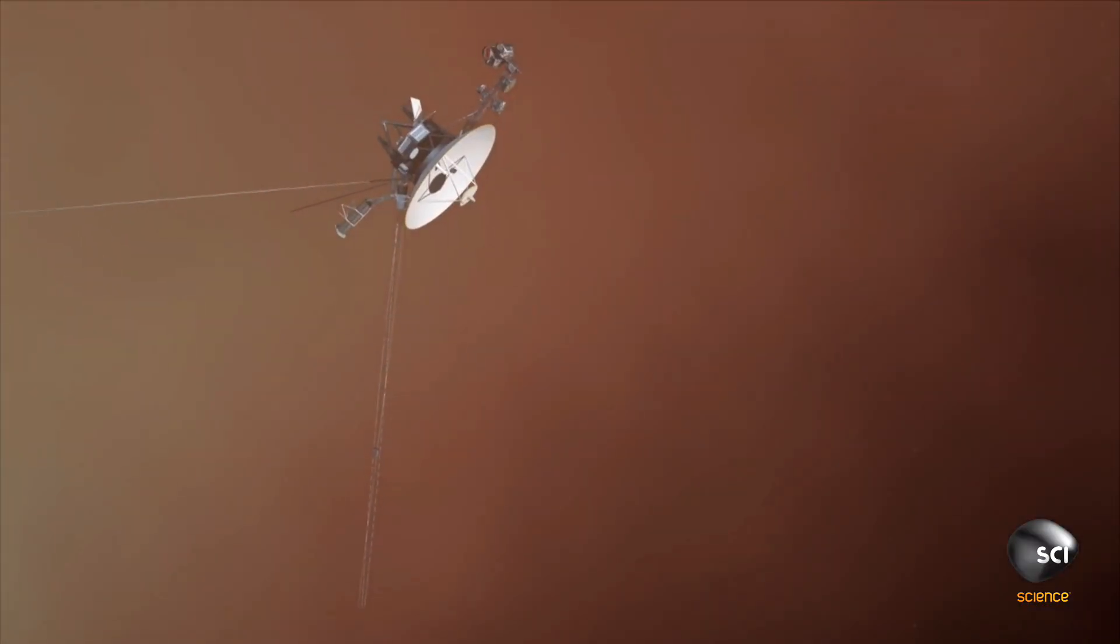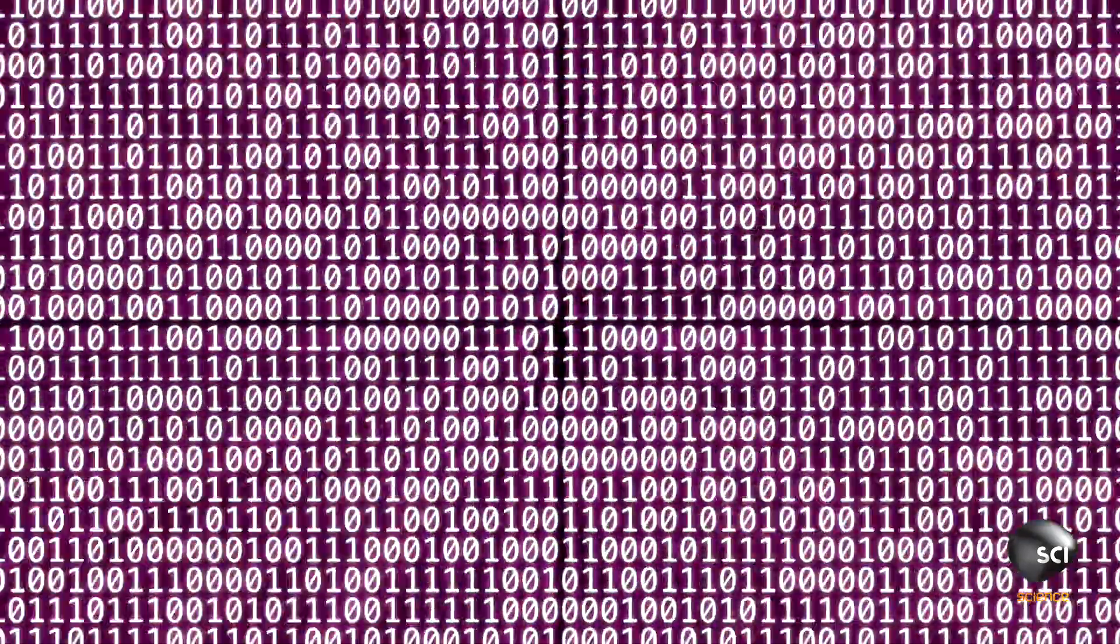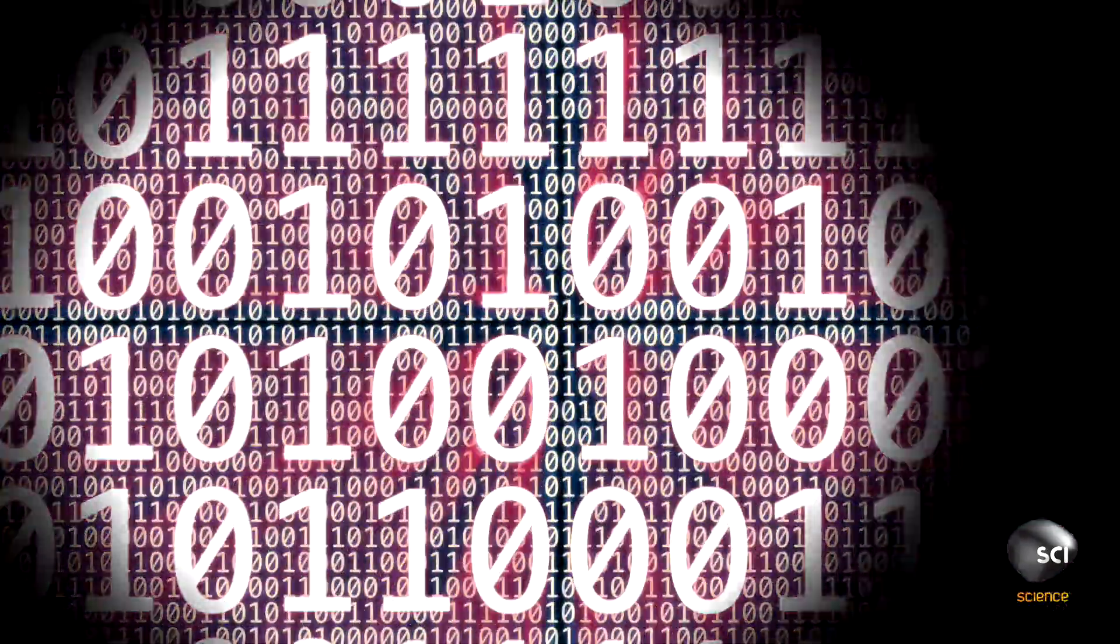They suddenly realize, wait a minute, in the complex binary codes that command the computer system on Voyager 2, a single digit has been flipped from a 1 to a 0.